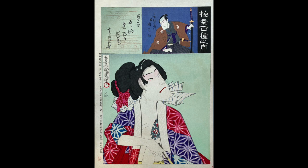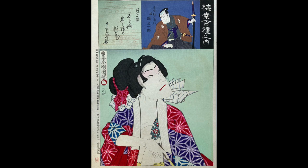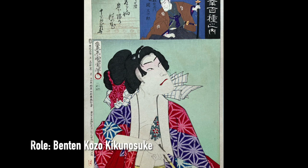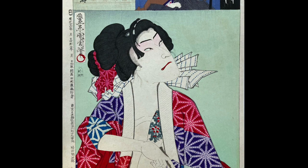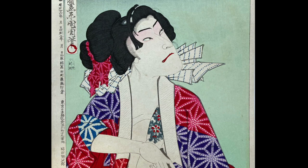Since women aren't allowed to act in kabuki plays, Baiko also played women's roles. Here we see him as Benten Kozo Kikunosuke, who was a rebellious kid from a wealthy family who joined a group of thieves and was often disguised as a woman. On this print you can see the embossing on the borders of his kimono and the arm with a bit of a tattoo showing.